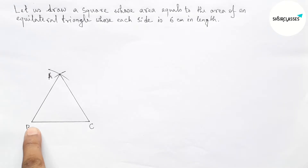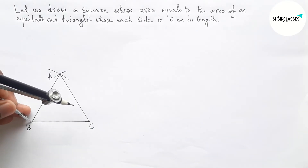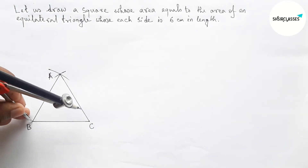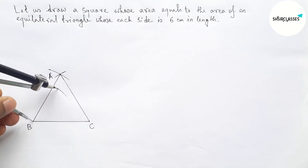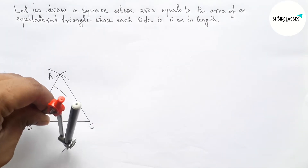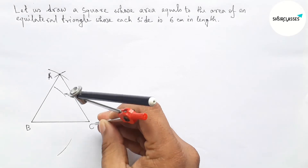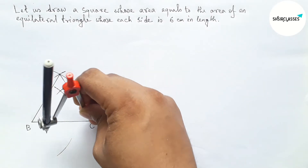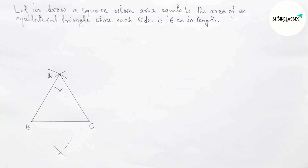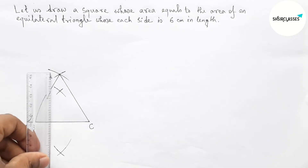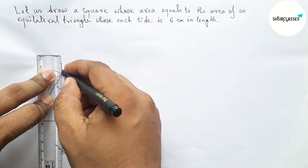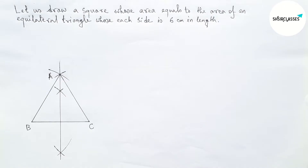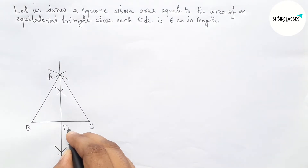Next, we have to bisect the line BC. Putting the compass on point B and taking greater than half of BC, drawing an arc. Drawing an arc with the same length, cutting here. Now joining this perpendicular bisector which passes through point A. Taking point D here.